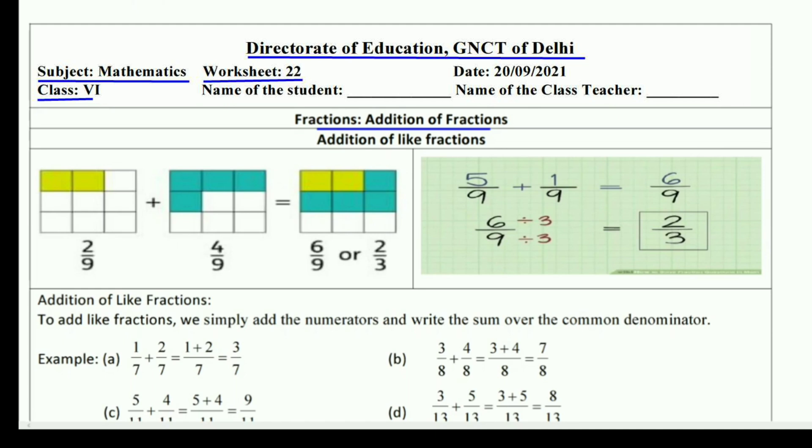You also saw that like fractions are easy to compare because we only look at the numerator, not the denominator. But you know what numerator and denominator are, right? For example, in 2/9, two is the numerator and nine is the denominator.